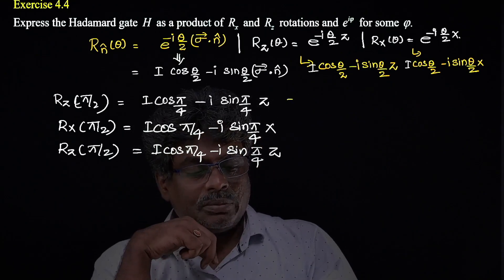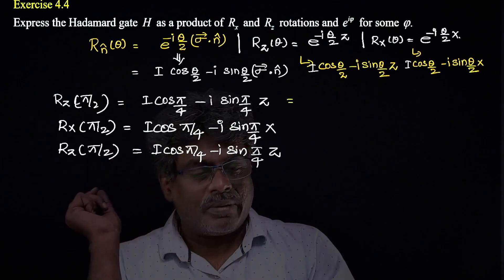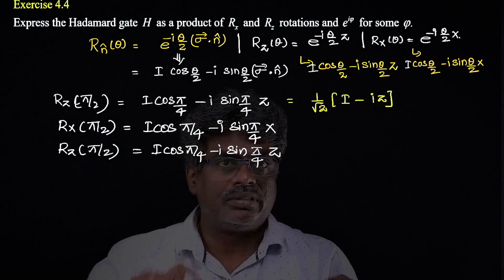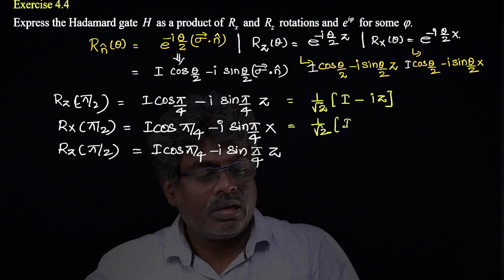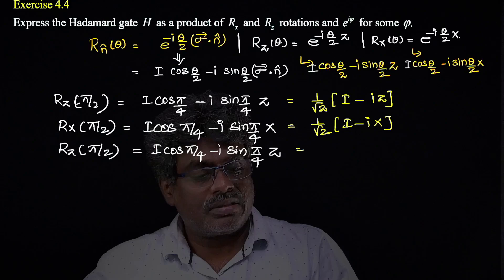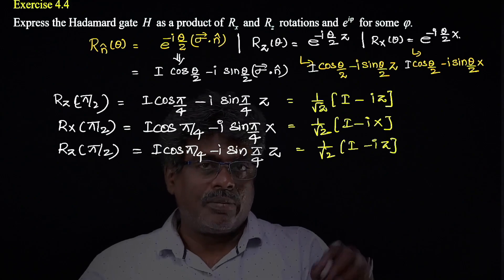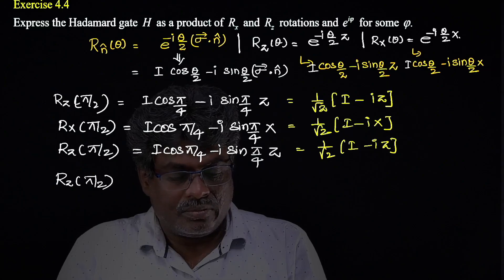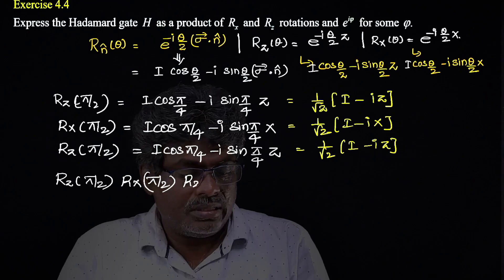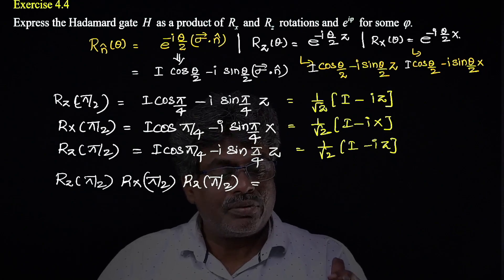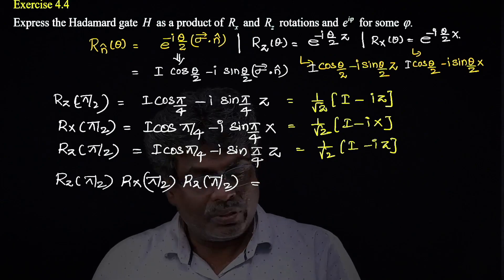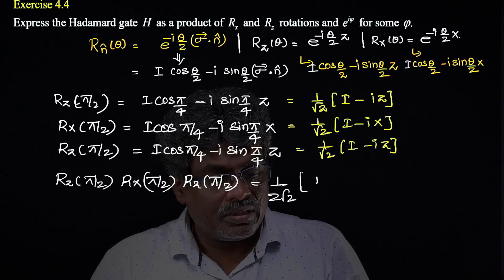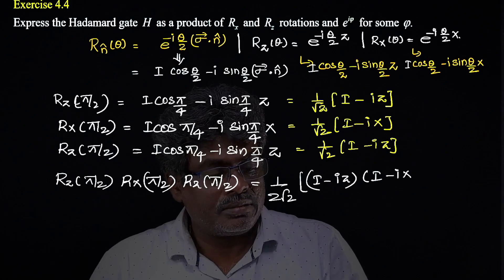Since cos(π/4) = sin(π/4) = 1/√2, each matrix becomes (1/√2)(I - iZ), (1/√2)(I - iX), and (1/√2)(I - iZ) respectively. The overall factor is 1/(2√2), and we need to multiply the three expressions (I - iZ)(I - iX)(I - iZ).